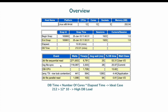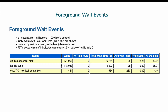Now let's drill down to see further what the exact cause is. Looking at the foreground wait events, the top event is db file sequential read, again consuming around 53 percent of database time with an average wait of 25 milliseconds — definitely higher than normal. Second is the log file sync wait, consuming 28 milliseconds of average wait and 25 percent of database time, which is also higher.